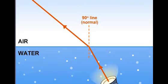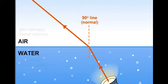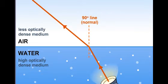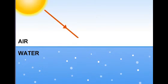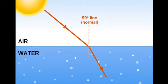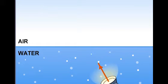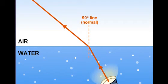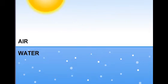When the speed of light is slow in a medium, we say that the medium is optically denser. For example, air is less optically dense than water. Light bends towards the normal when it travels from air to water, and bends away from the normal when it travels from water to air.